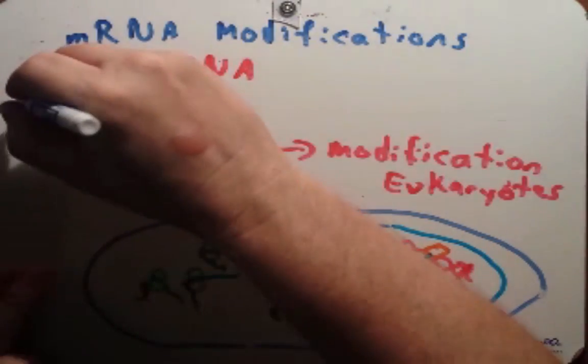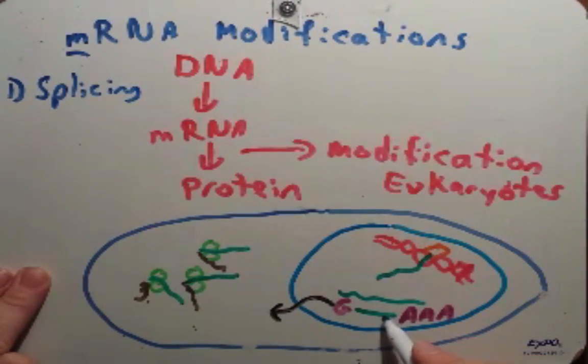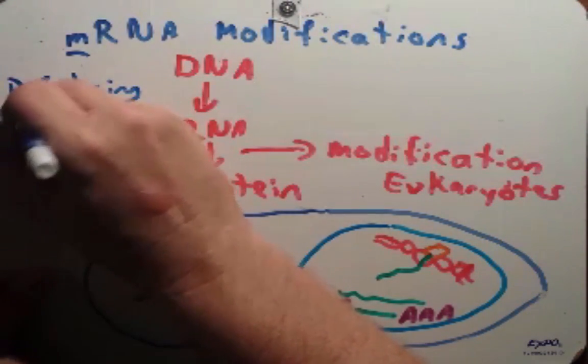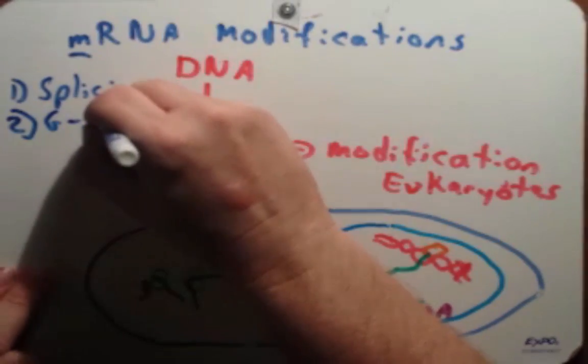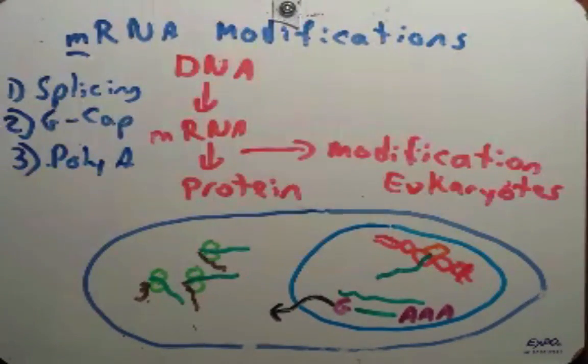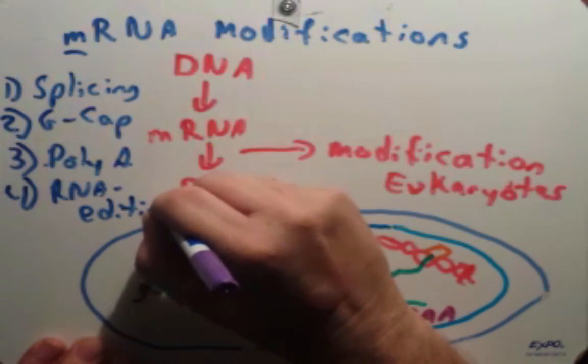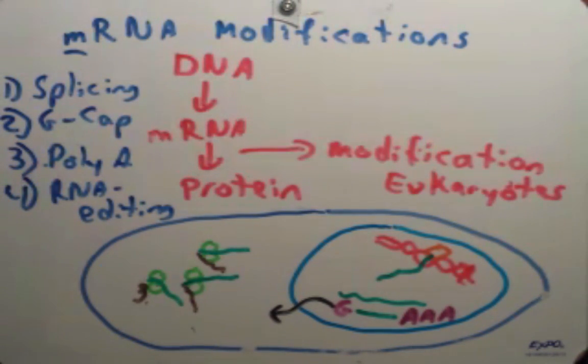A few things that happen: it gets shorter because these sequences called introns have to be removed. Next, this RNA molecule at the 5' end gets a modified guanine put on it, we call it the G cap. And then at the 3' end it gets a long poly-A tail attached to it. At this point this modified RNA can leave the nucleus and attach to these ribosomes and begin making proteins. So there will be four things we're going to talk about: splicing, putting on that G cap, the poly-A tail, and one other really cool thing called RNA editing.